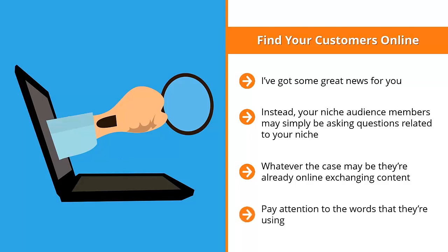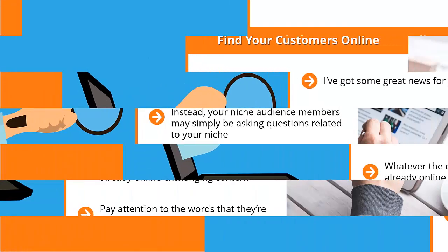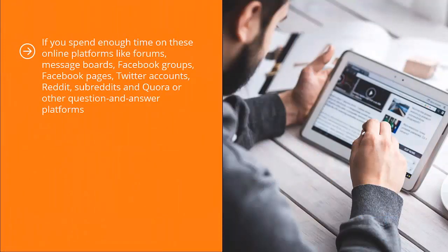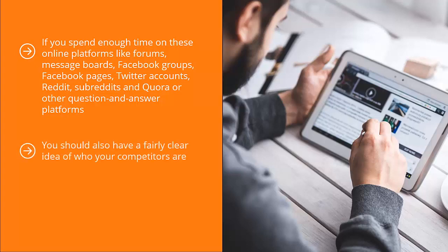Pay attention to the words that they're using. Pay attention to the solutions that they're already talking about. Understand the shortcomings of the solutions people are already aware of. If you spend enough time on online platforms like forums, message boards, Facebook groups, Facebook pages, Twitter accounts, Reddit, subreddits, and Quora or other question and answer platforms, you should have a clear understanding of who your audience members are and their expectations.